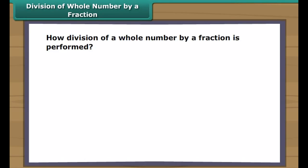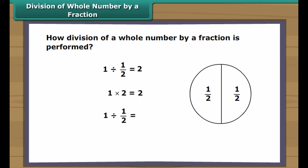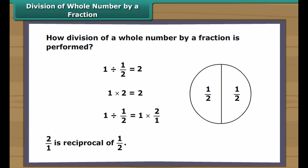Division of a whole number by a fraction: consider one divided by one-half. We divide a whole into equal parts so that each part is half of the whole, giving us two halves. So one divided by one-half equals two. Also, one multiplied by two equals two. Thus, one divided by one-half equals one multiplied by two-over-one. Two-over-one is the reciprocal of one-half.